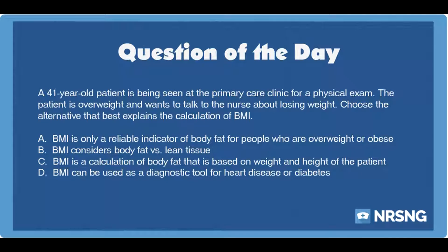A. BMI is only a reliable indicator of body fat for people who are overweight or obese. B. BMI considers body fat versus lean tissue. C. BMI is a calculation of body fat that is based on weight and height of the patient. D. BMI can be used as a diagnostic tool for heart disease or diabetes.